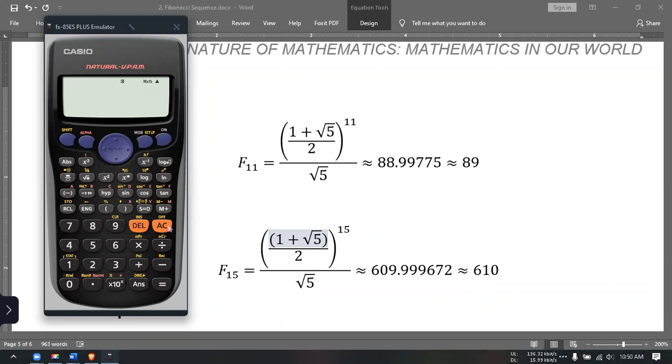Let's try this part by part. So part 1: 1 plus square root of 5.